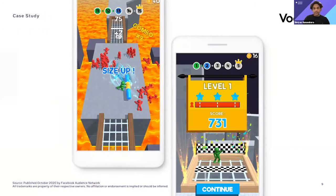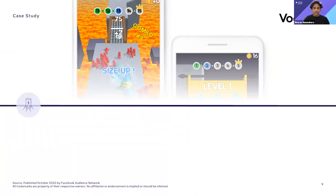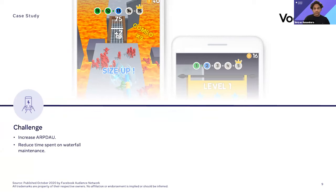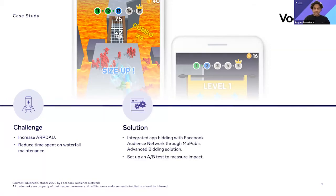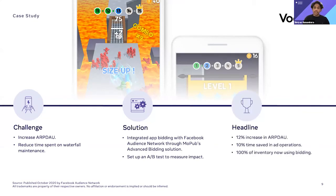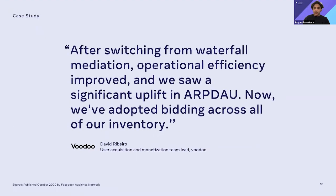We've seen the impact of bidding firsthand with some of the publishers we work with. On screen you can see a case study that Audience Network put together with Voodoo. Voodoo were looking to increase their ARPDAO and also reduce the time spent on waterfall maintenance. They A-B tested bidding, and the results were a 12% increase in ARPDAO and a 10% reduction in time spent on ad operations. Following this A-B test, they decided to move all their apps over to bidding, which really speaks to what an impact it can have on a business.